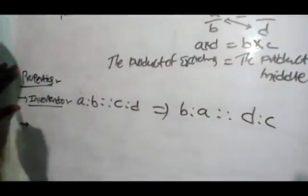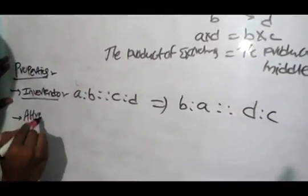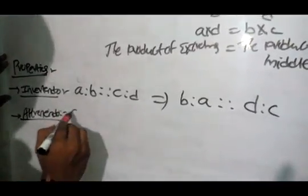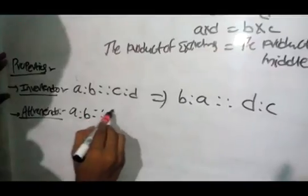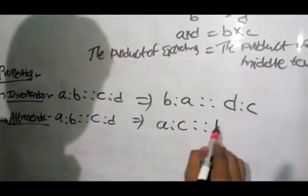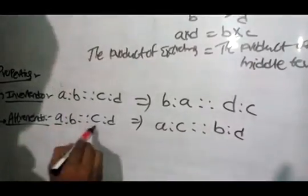Next one is alternando. If a is to b equal to c is to d, the alternando will be a is to c equal to b is to d. That means it can be changed.